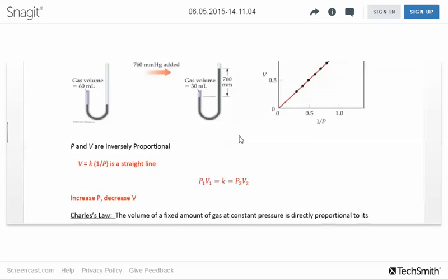You can come up with this equation: volume is K times one over P, where K is just a constant. If you rearrange this equation, you get pressure times volume equals a constant. Well, if that works for one set of pressure and volume, it has to work for another set, because this is a constant. So you get P1V1 equals P2V2.